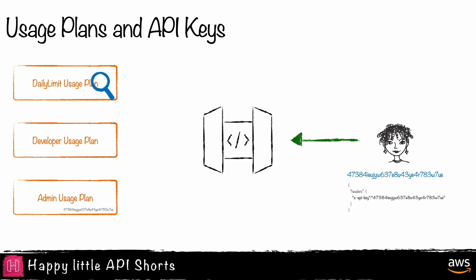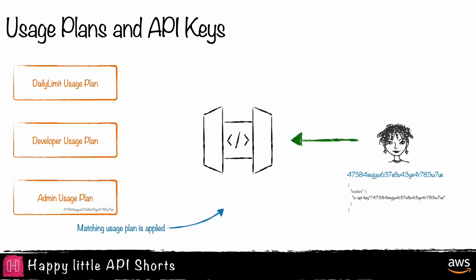When a request comes in, API Gateway looks up the API key and applies the metering strategy defined in the associated usage plan.